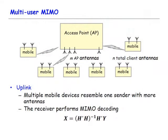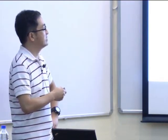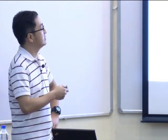MIMO operations require multiple antennas at both the transmitter and receiver. It's not typical for a mobile device to have many receiving antennas, due to size and power considerations. We consider that the access point can have many antennas since it's more powerful with a power supply, but mobile stations — these mobile devices — typically have only one or two antennas. So how can we extend MIMO to situations where mobile devices have only a few antennas?